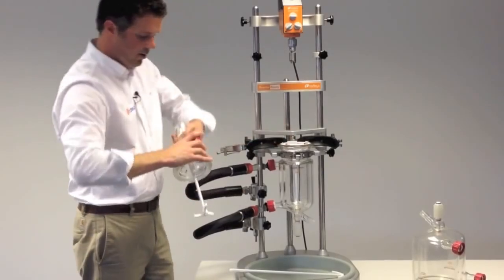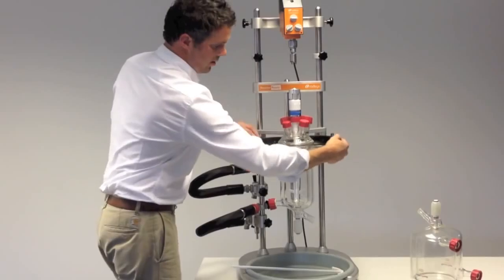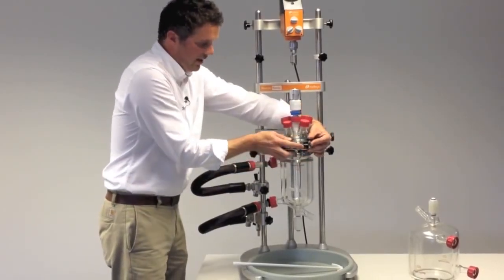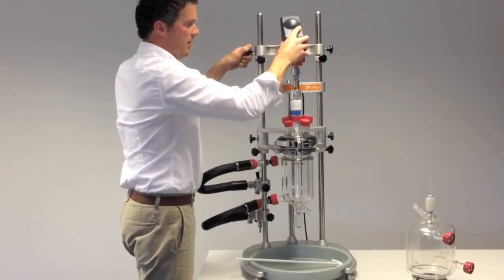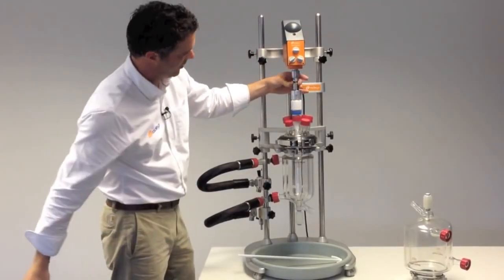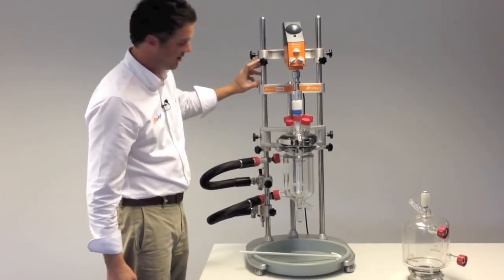The o-ring support collar. The quick release clamp just brings that all together and gives a good seal. Then we can drop the stirrer motor back down and you can see that everything's lined back up and it's just dropped back down to the support collars on the framework.